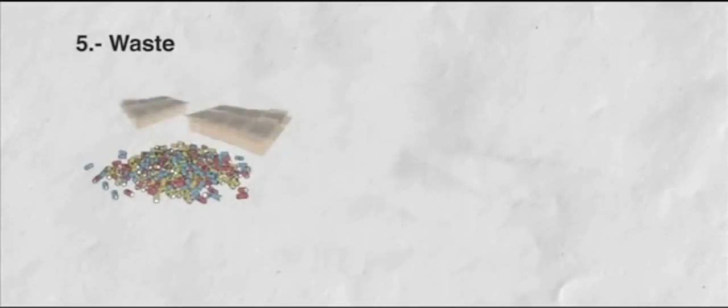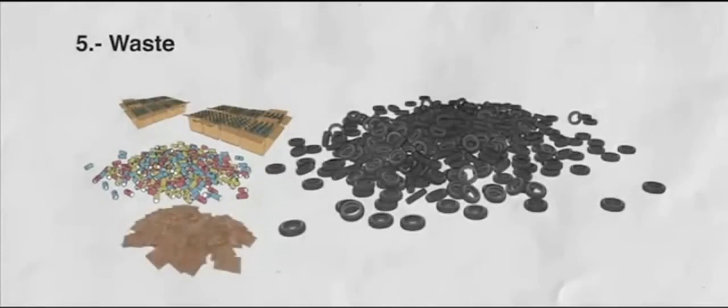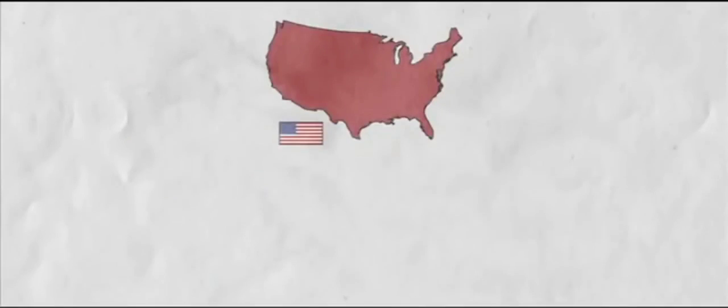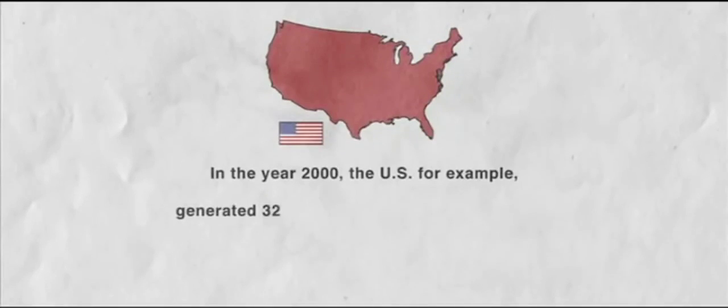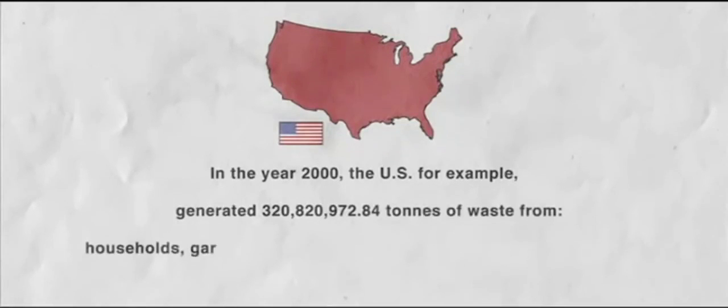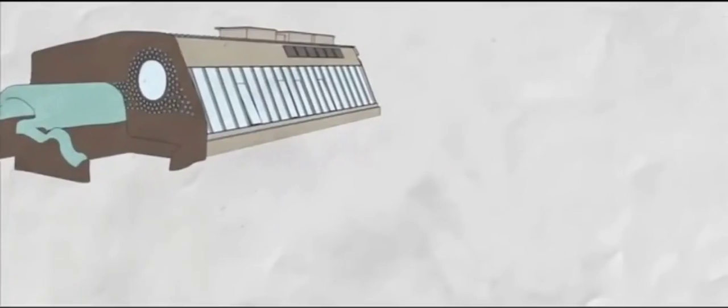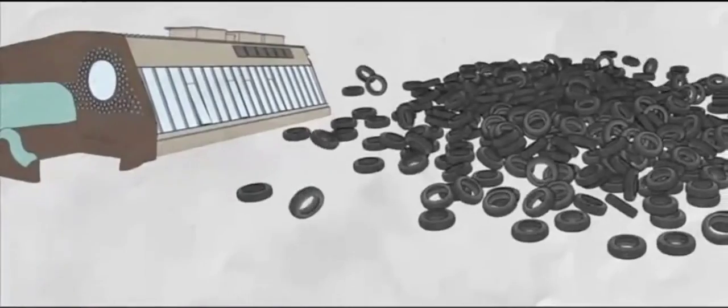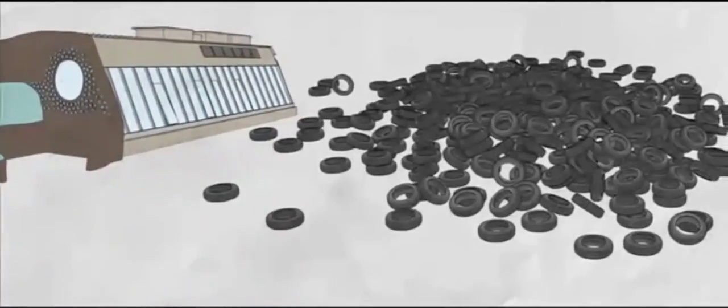Five, wastes. Everything we consume is a potential waste, because nothing is useful forever. Some materials no longer used don't degrade, occupying space and contaminating in several ways. In the year 2000, the US, for example, generated 320,820,972.84 tonnes of waste from households, gardens, parks, as well as commercial and institutional entities. Earthships use materials like tires, that otherwise would have little or no use at all.